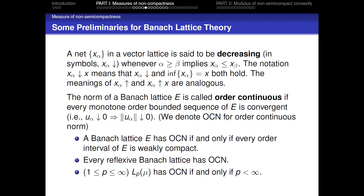A Banach lattice is a real Banach space E with a norm and an ordering such that E is a vector lattice and the norm is a lattice norm. A net in a vector lattice is said to be decreasing whenever α > β implies x_α ≤ x_β, and analogously for increasing. The norm of a Banach lattice is called order continuous if every monotone order-bounded sequence is norm convergent, denoted OCN.